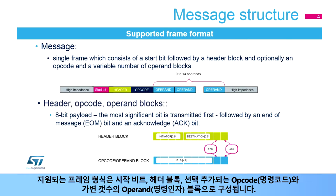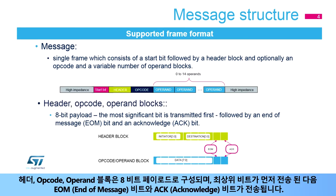The supported frame format consists of a start bit followed by a header block and optionally an opcode, and then a variable number of operand blocks. Header, opcode, and operand blocks consist of an 8-bit payload where the most significant bit is transmitted first, followed by an end-of-message or EOM bit, and an acknowledge or ACK bit.